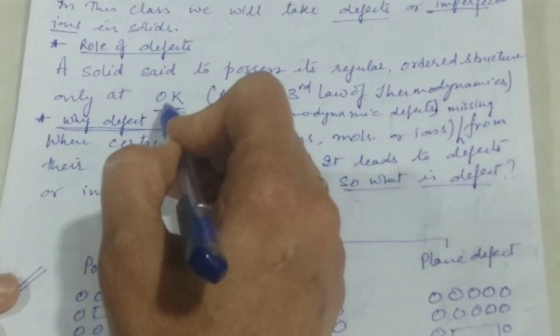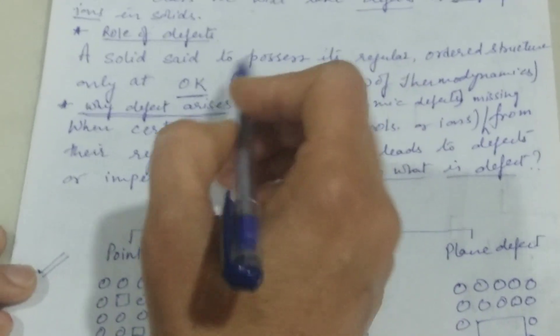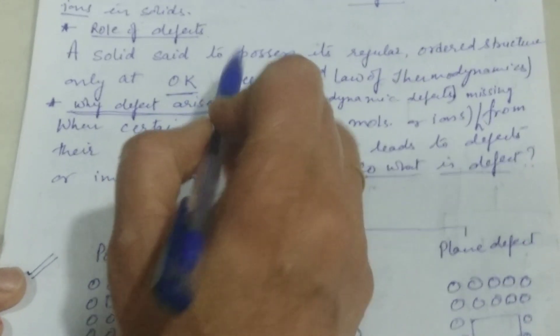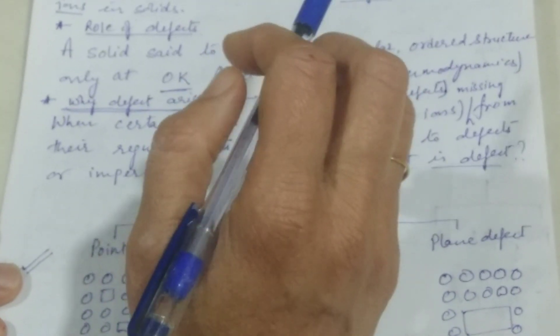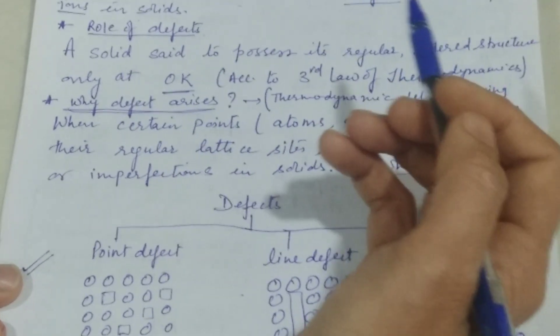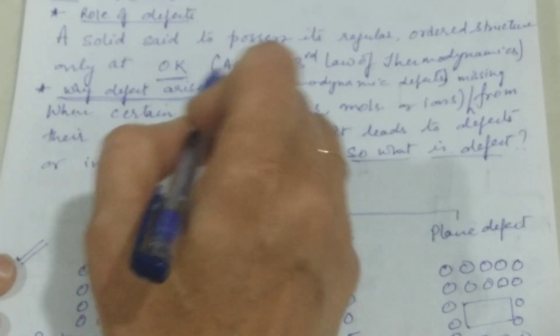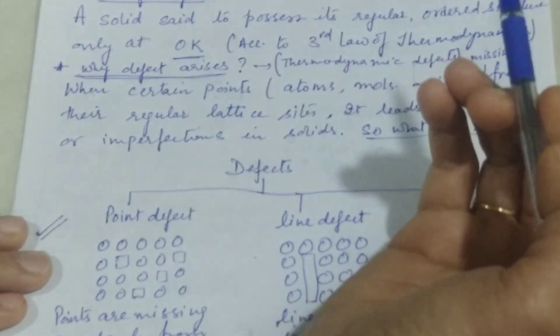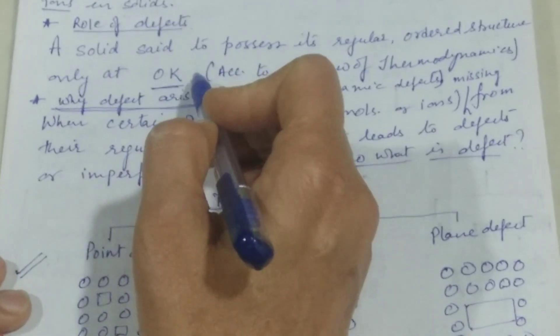The entropy of a perfectly crystalline substance is zero at zero Kelvin. This means only at zero Kelvin can we have an ordered, regular arrangement of the points in the lattice of a solid. Only at zero Kelvin can we talk about the actual structure of the solid, but it is practically impossible to take the solid to zero Kelvin.